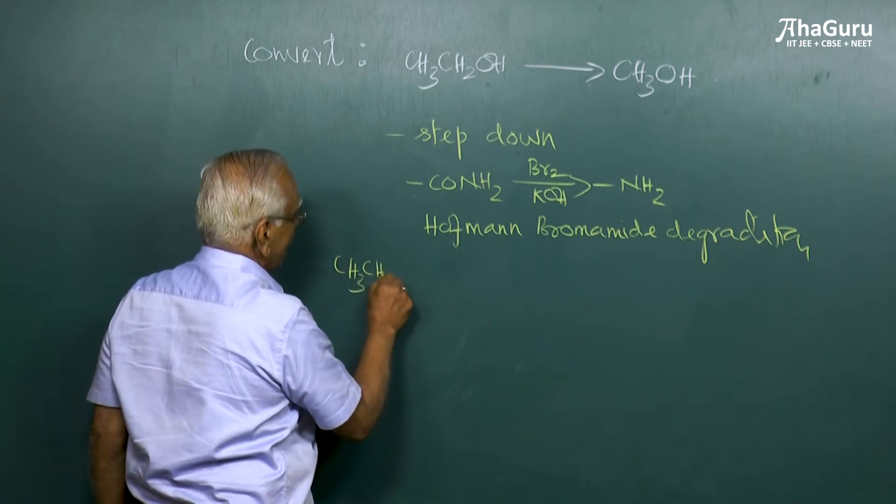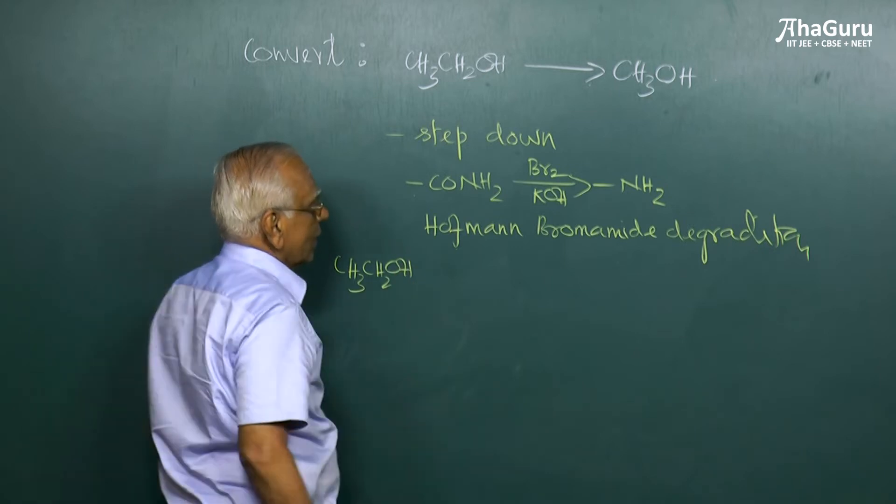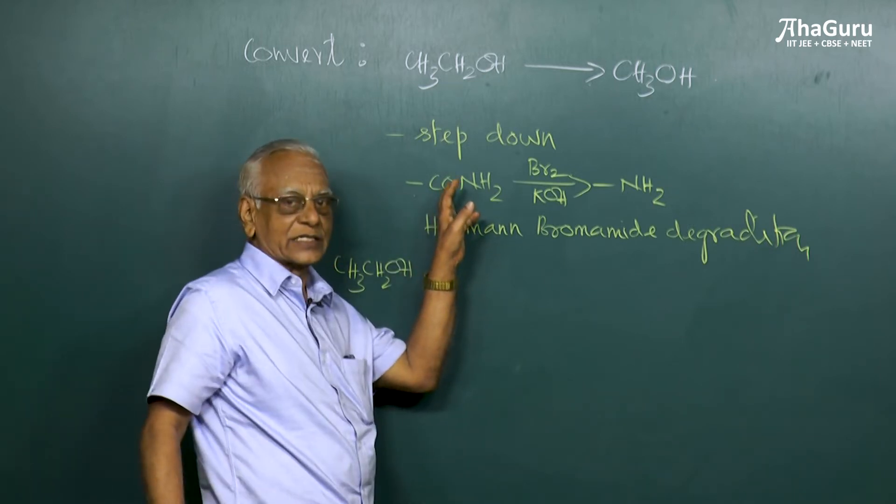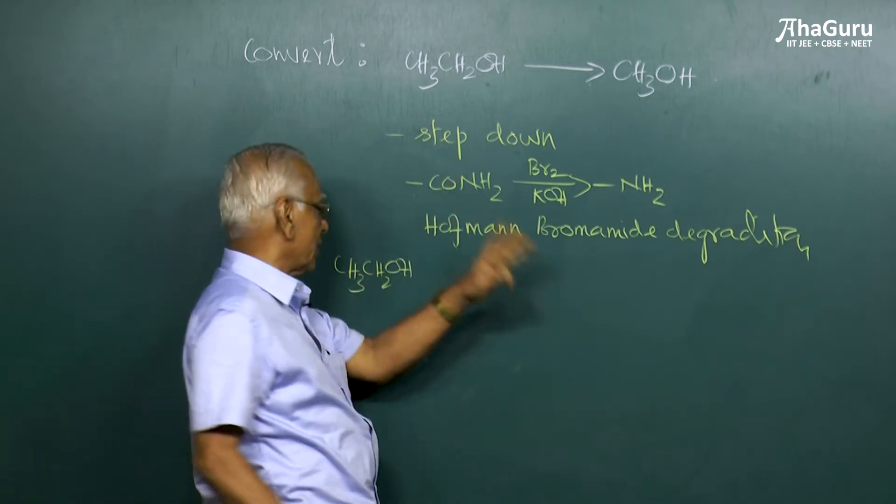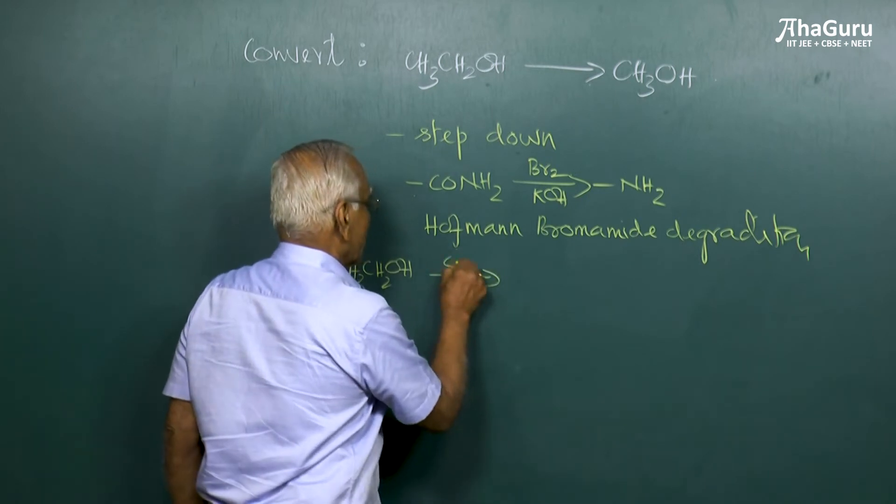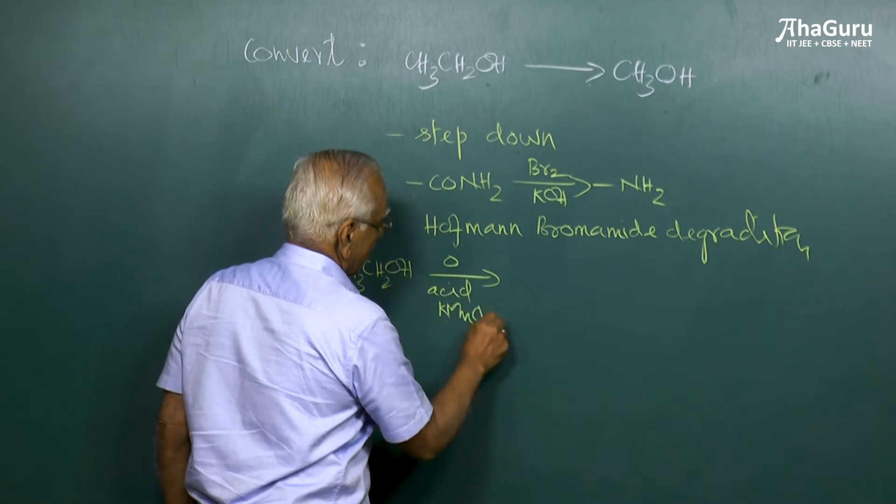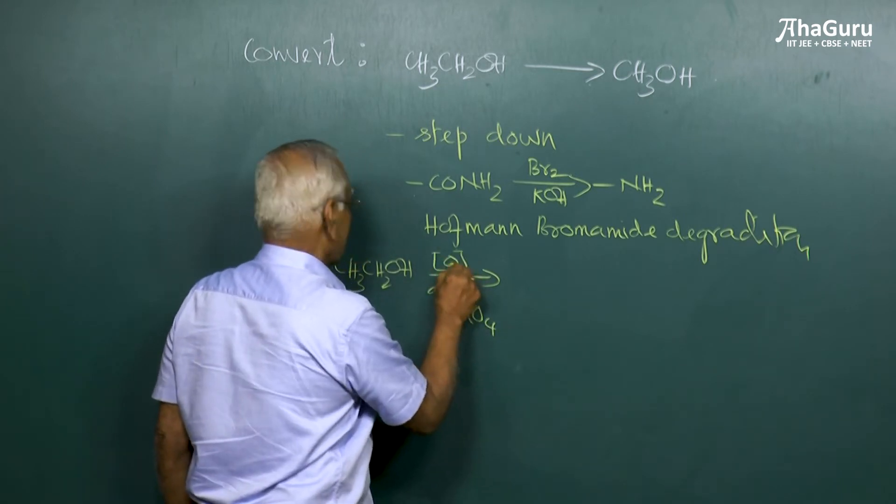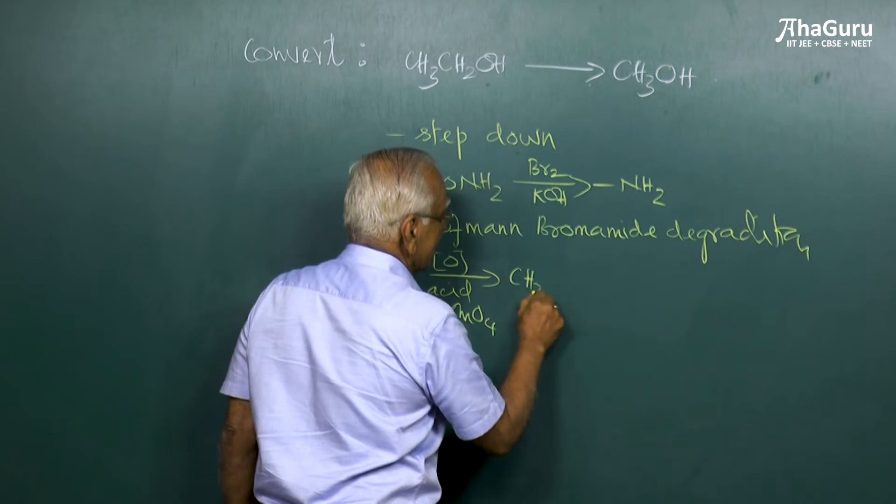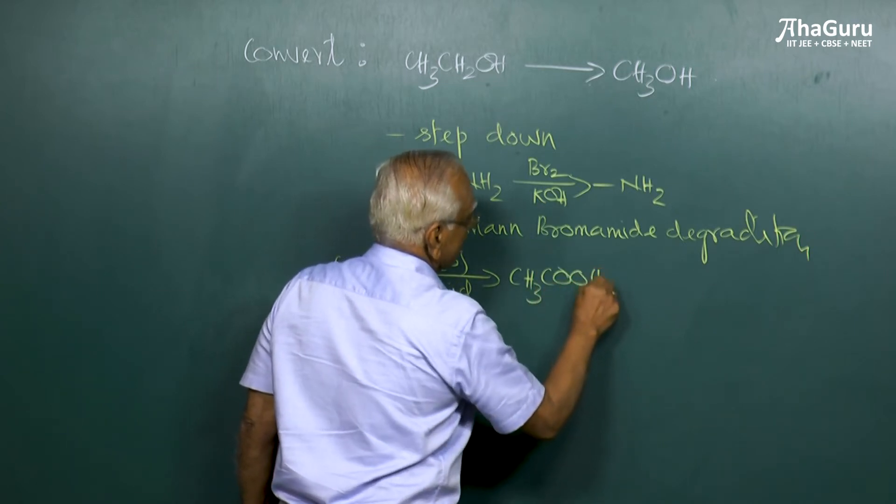Ethanol cannot be converted into an amide. Amides are obtained only from acids. So we have to convert this into an acid using an oxidizing agent. You can use acidified potassium permanganate, and that oxidizes ethanol to ethanoic acid, acetic acid.